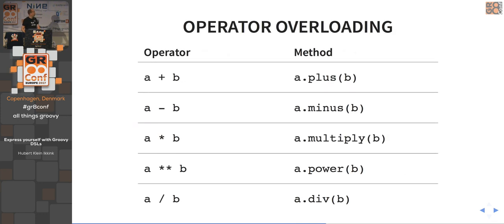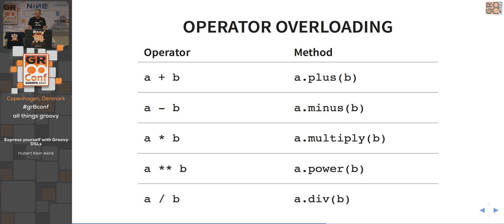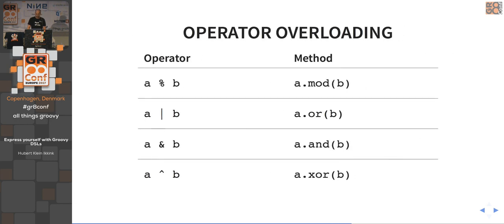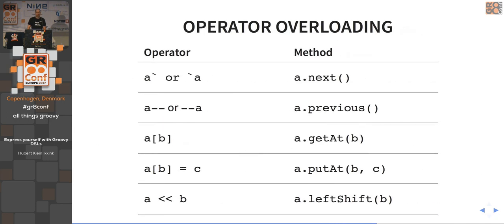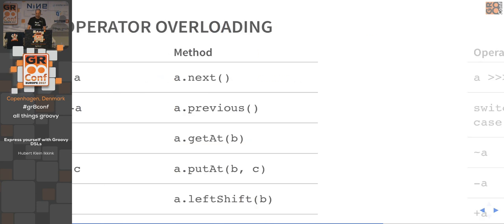Closure support is key: if a closure is the last argument in your method signature, you get a very concise syntax. Operator overloading maps operators to methods — for example, a+b maps to the method a.plus(b). If you implement those methods in your own classes and expose them through the DSL, users can use operators which can be quite powerful. There are many operators and corresponding methods available.